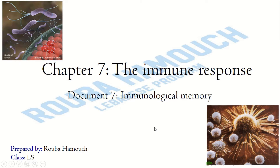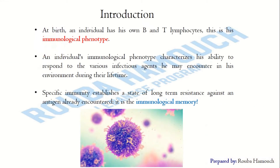In this video we are going to explain the importance of the immunological memory in the elimination of infectious agents. At birth, an individual has his own B and T lymphocytes — a repertoire of different B and T lymphocytes. This is the immunological phenotype, which characterizes the ability of the individual to respond to the various infectious agents he may encounter in his environment during his lifetime.